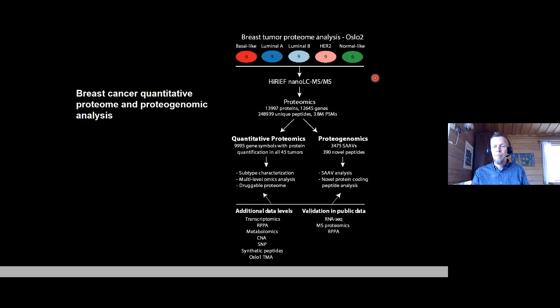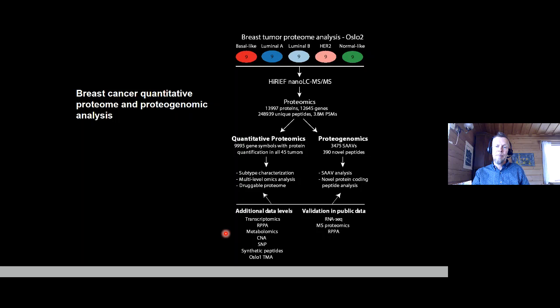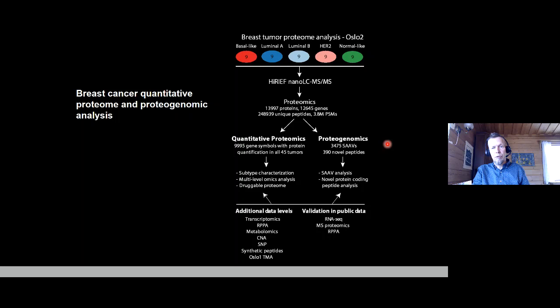Using the isoelectric focusing proteomics method, we performed quantitative proteome analysis of the breast cancer proteome, covering about 14,000 proteins and 10,000 proteins across the cohort. We then compiled other data already generated on these 45 tumors: transcriptomics, copy number alteration, phosphoproteomics, affinity-based proteomics with protein arrays, metabolomics, and more. Some of this data was also used for the proteogenomics analysis.